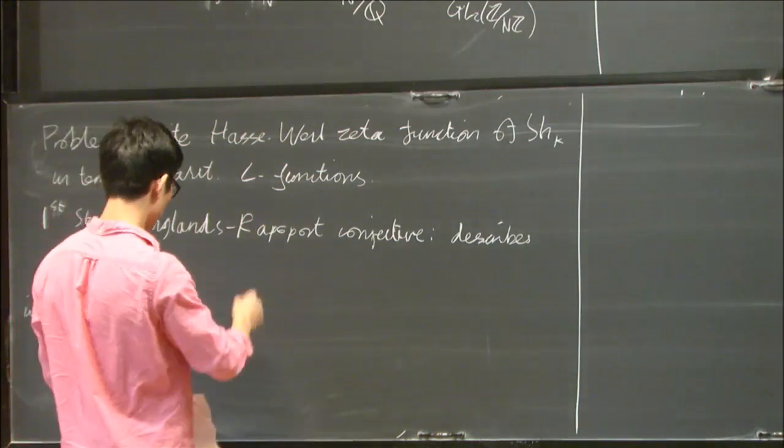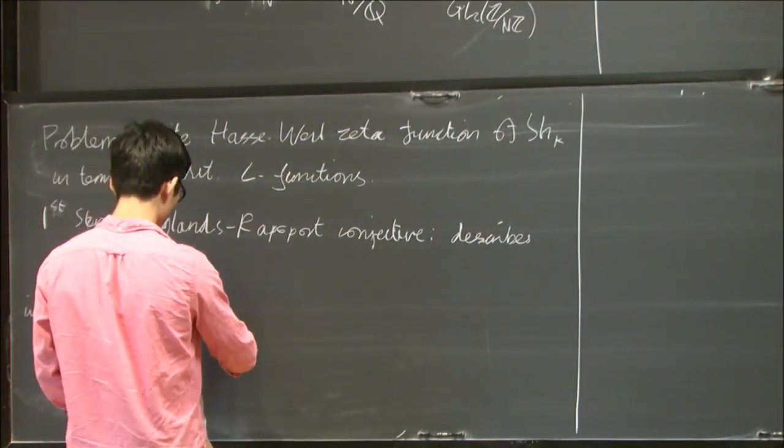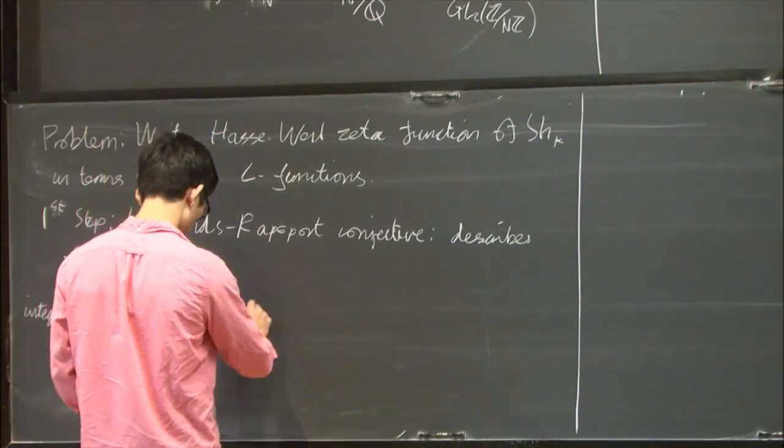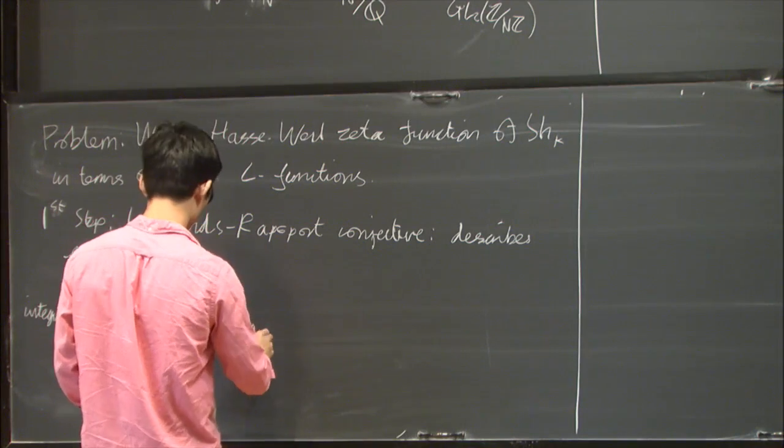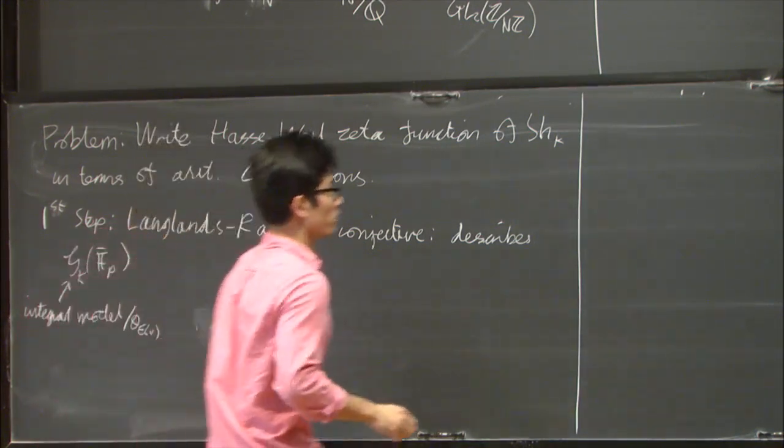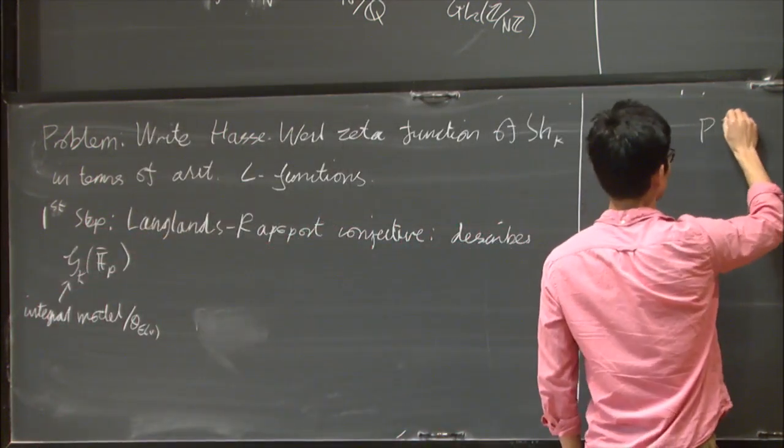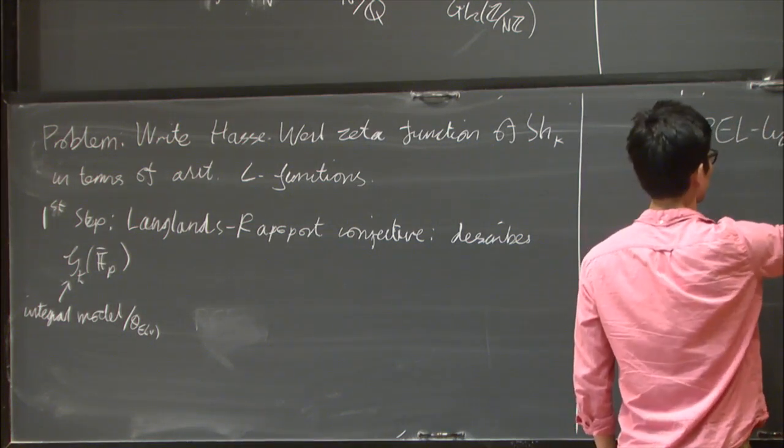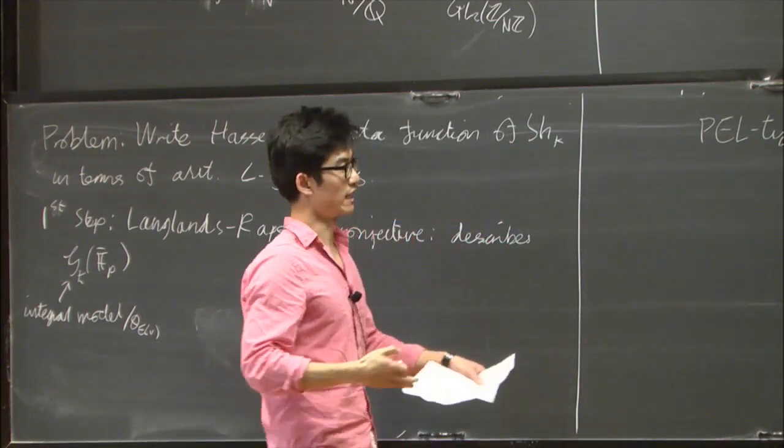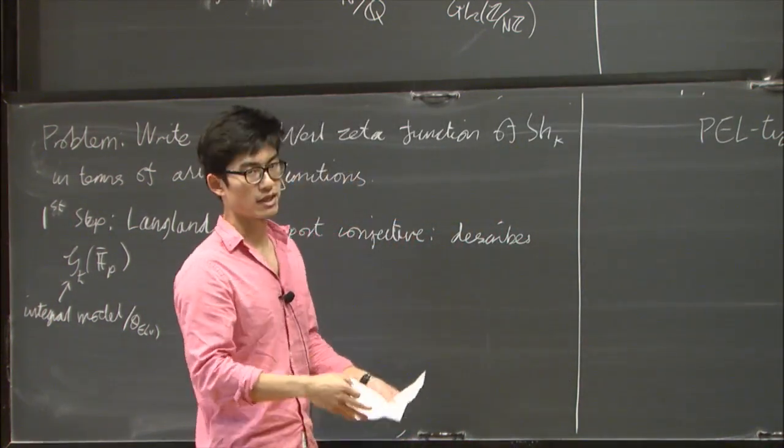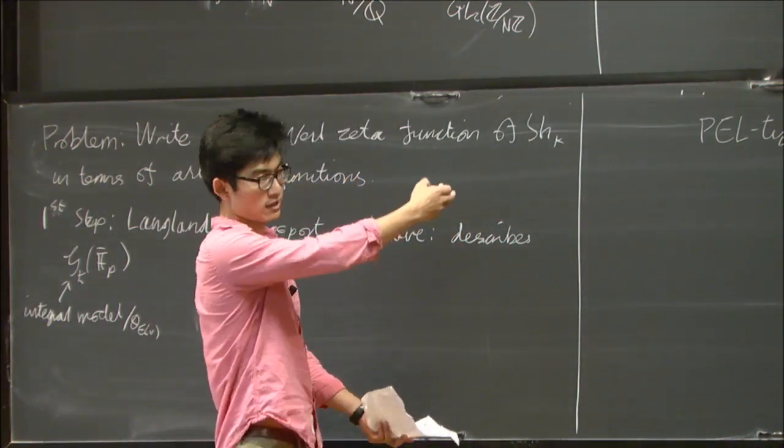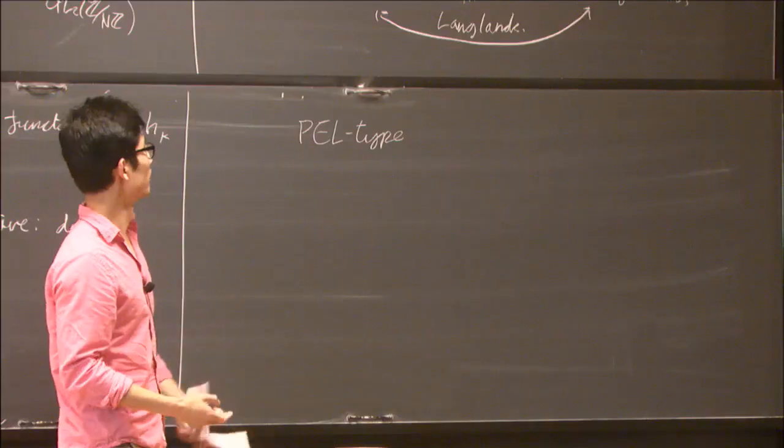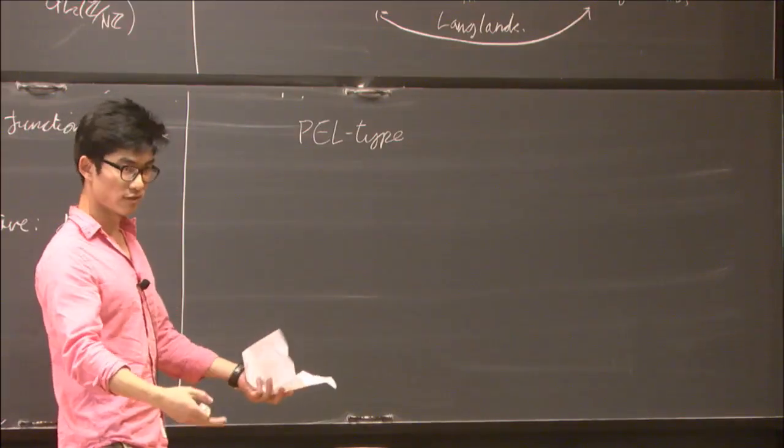Before I describe what I did, you should note that Shimura varieties come in a kind of hierarchy. The simplest type of Shimura varieties are what's called PEL type Shimura varieties. These Shimura varieties are very closely related to moduli spaces of elliptic curves or abelian varieties. The modular curves that we saw is an example of PEL type Shimura variety. Also things like Hilbert modular varieties are an example.